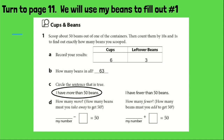Now it asks: how many more? To do this, I have to write a subtraction problem — how many beans must you take away to get 50? I'm going to start with 63, and then count how many beans I have to take away so that I will have 50. I had to take away 13 beans to get 50. I don't have fewer than 63, so I won't complete the second side.